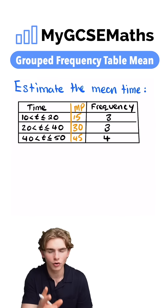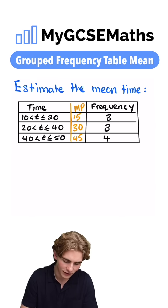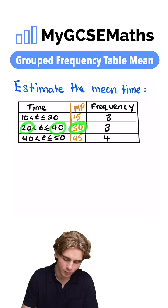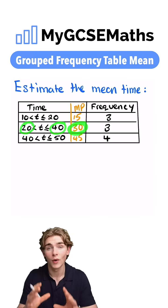You could either do that in your head or add together the lower bound and upper bound. For example, 20 plus 40 is 60, and divide that by 2 to get our midpoint. In this case, 60 divided by 2 would be 30.